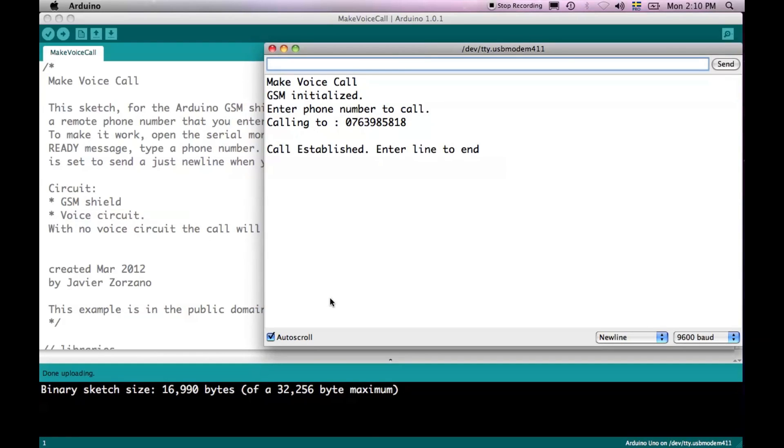If I answer the call on the serial port monitor, you're going to see that the call has been established, and I could actually talk from my phone to the shield. The only thing is that we haven't connected a speaker on the shield to be able to listen to the call.